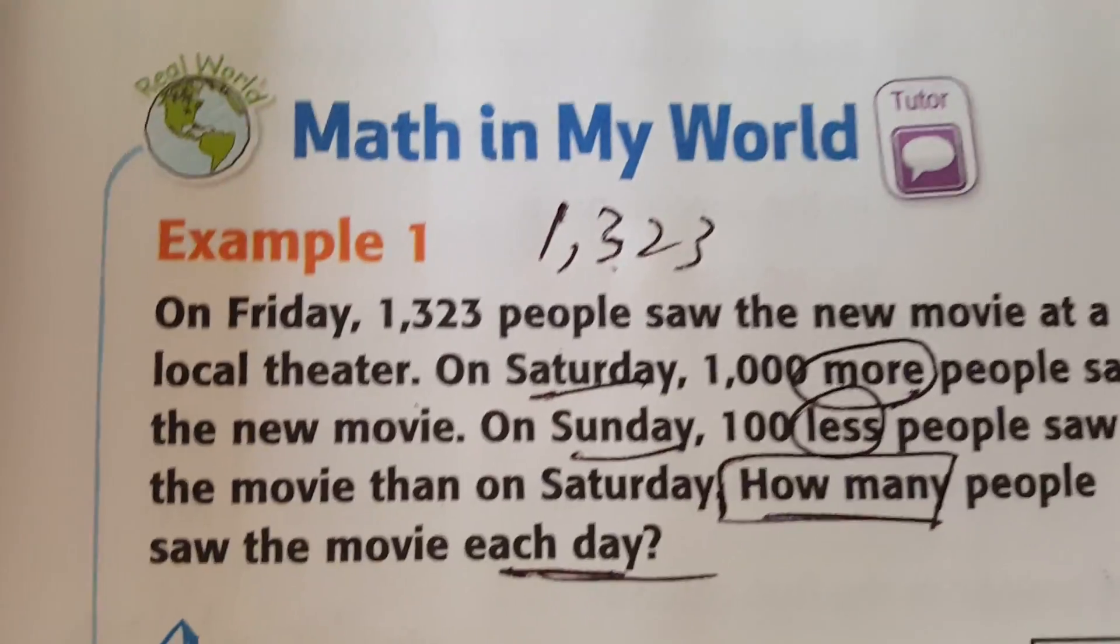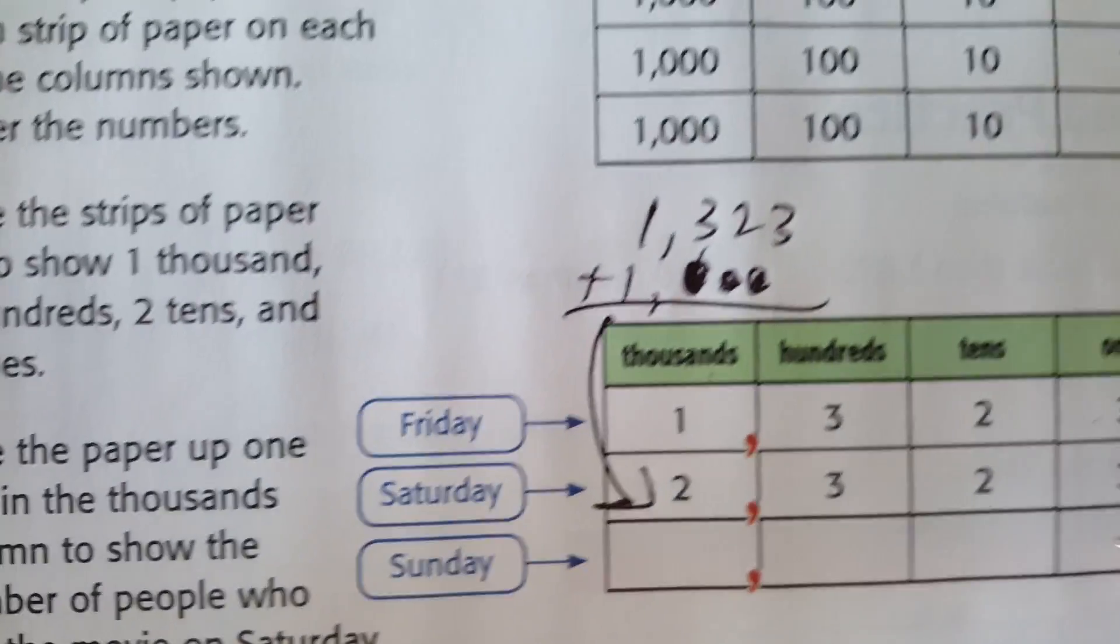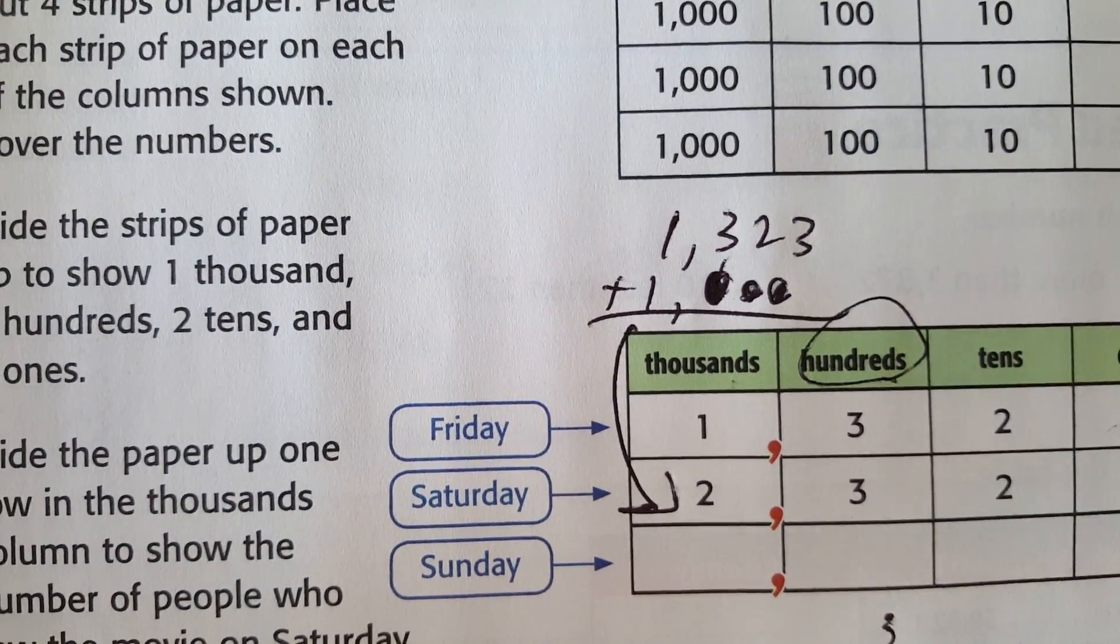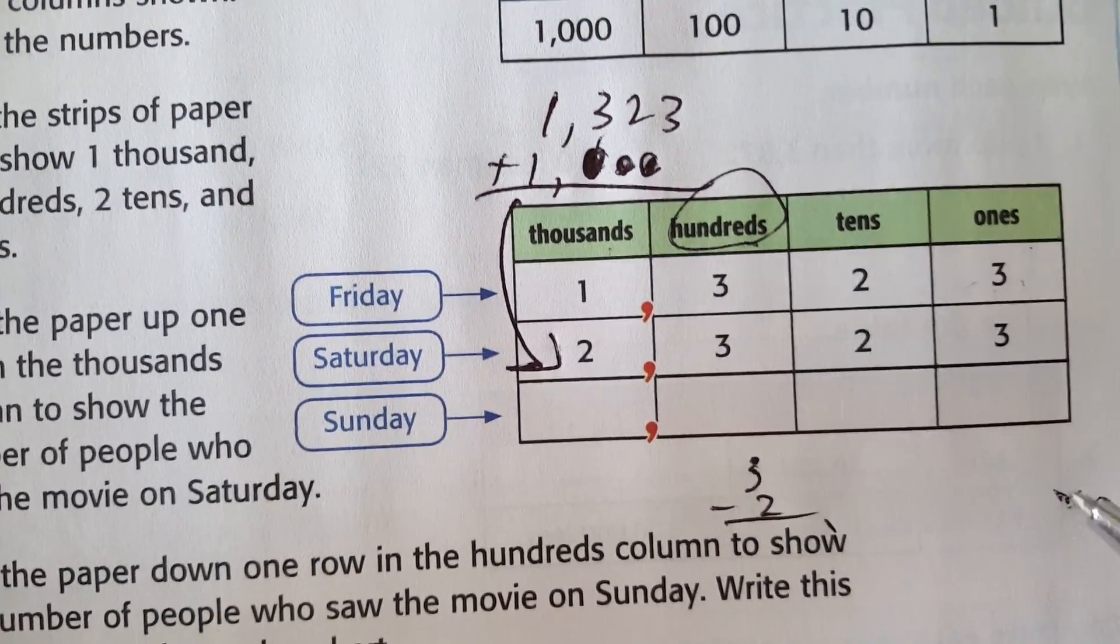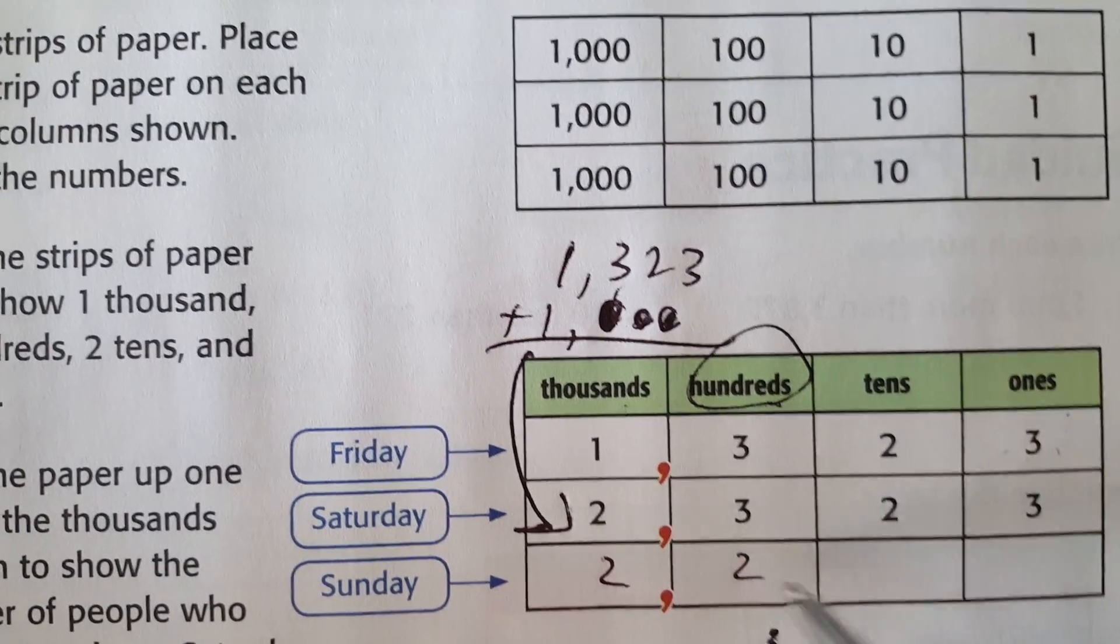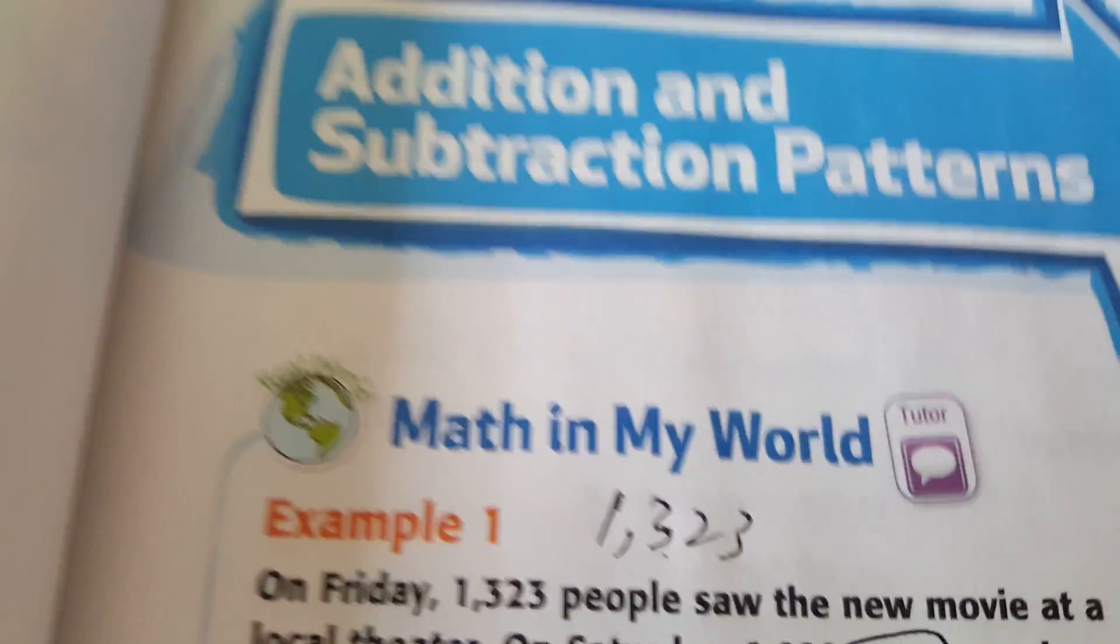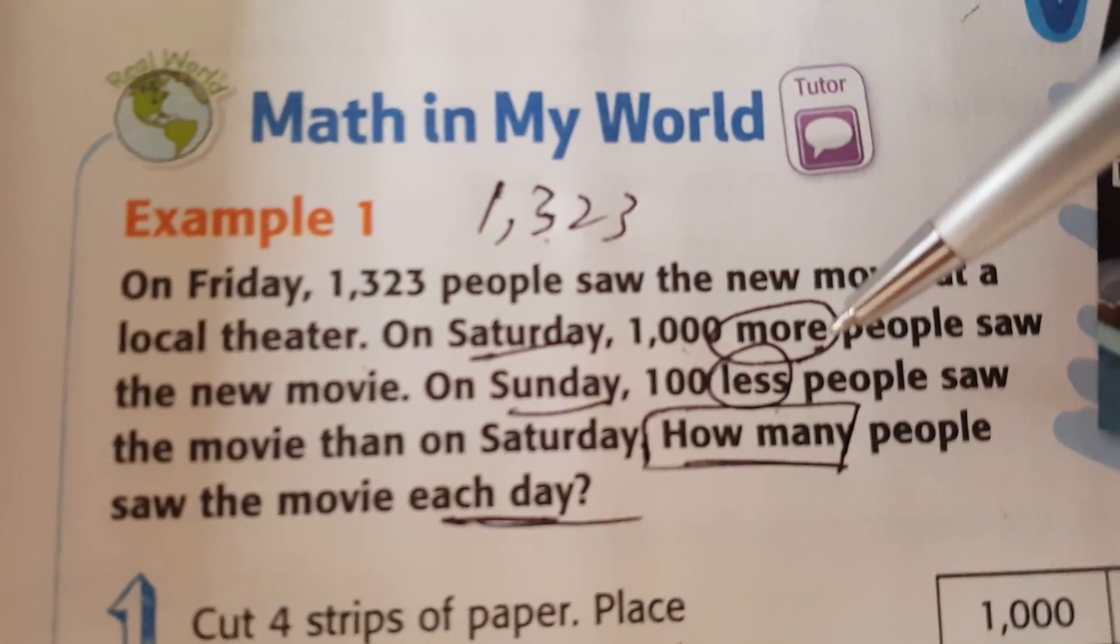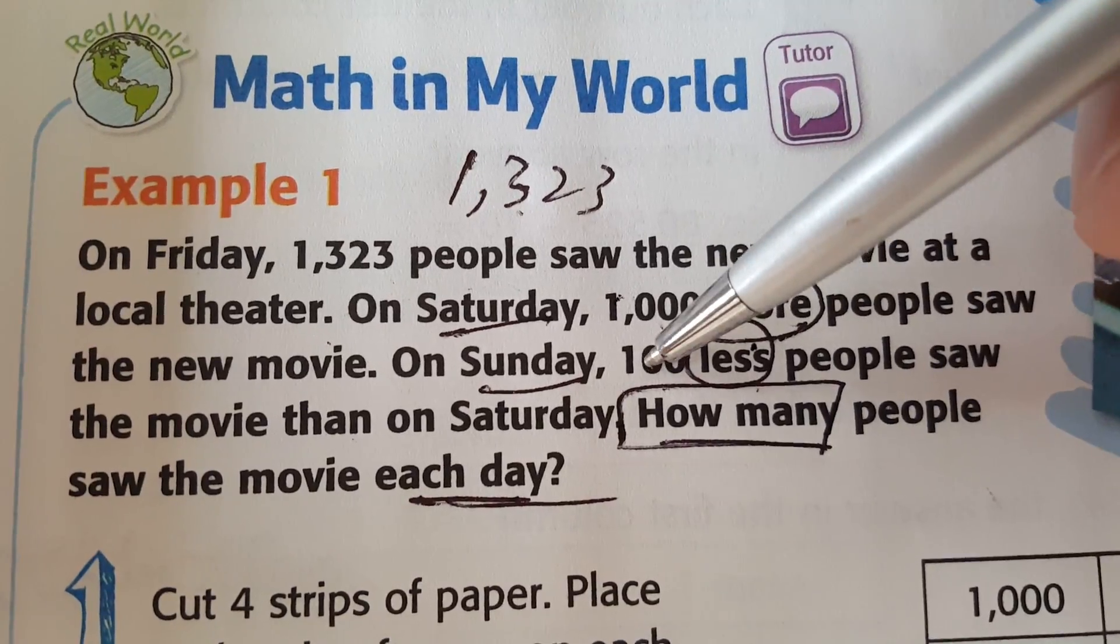Now how do we get Sunday? Keyword 100 less. It doesn't say 1,000. It says 100. So you look at the hundreds place, 3 minus 2 is 1. So this number doesn't change. This goes down to 2, 3. So you can write out numbers. Keyword is patterns. So you're looking at patterns of numbers. But you need to know what more means and what less means and where this is in the place value chart.